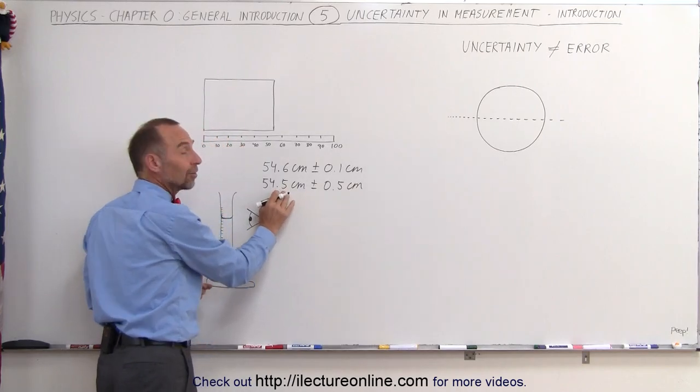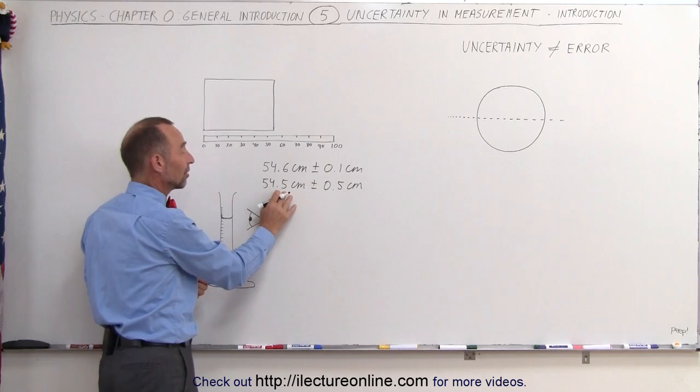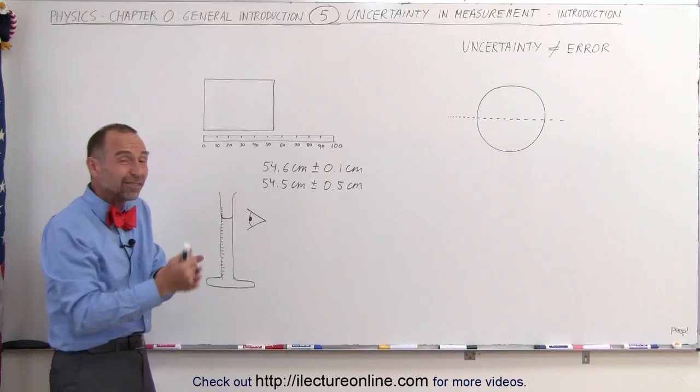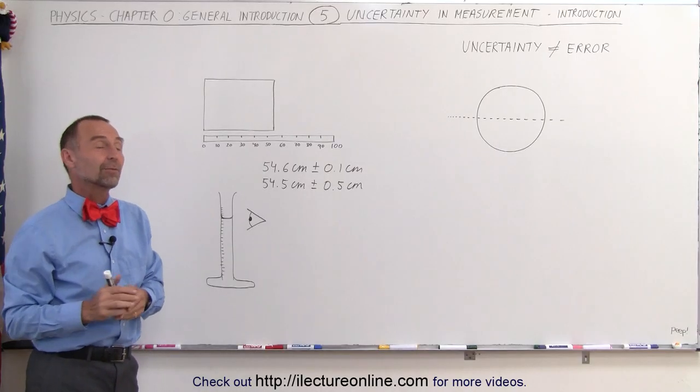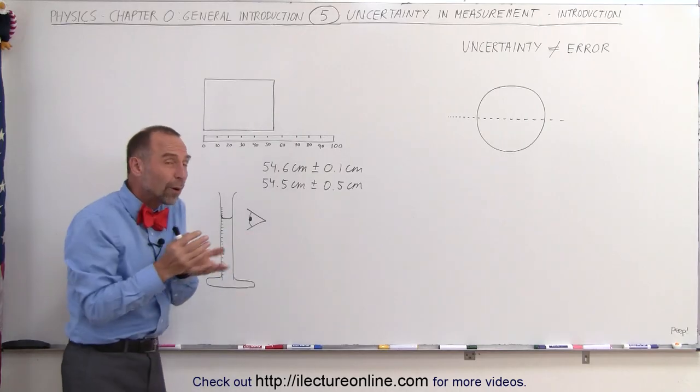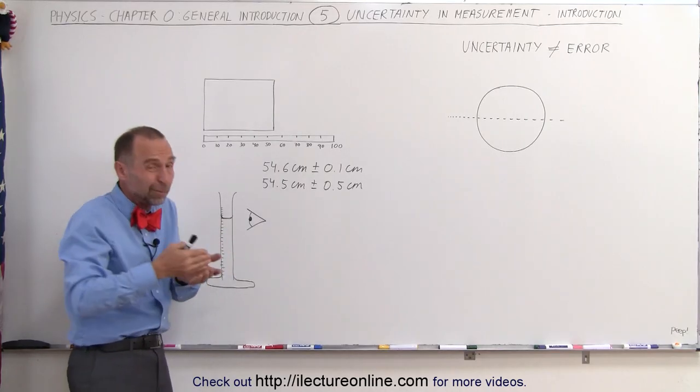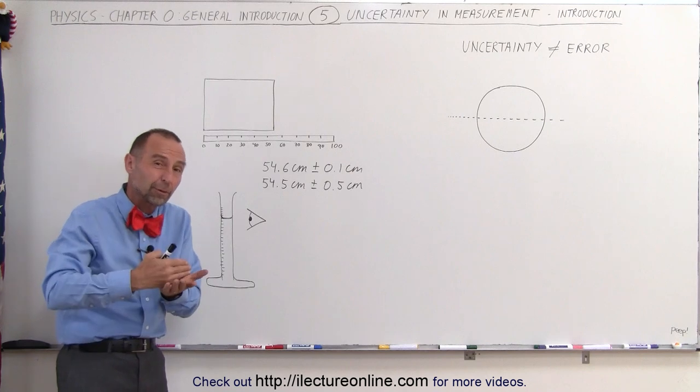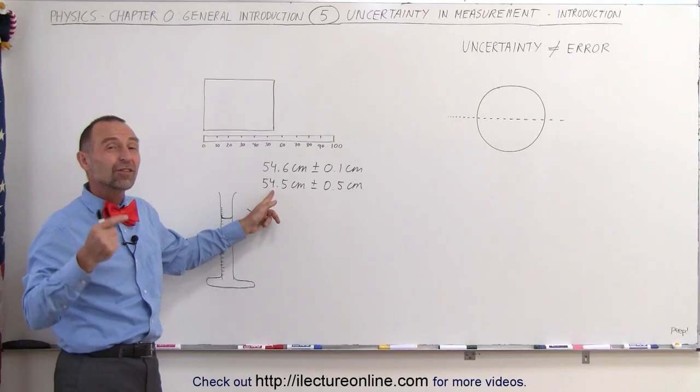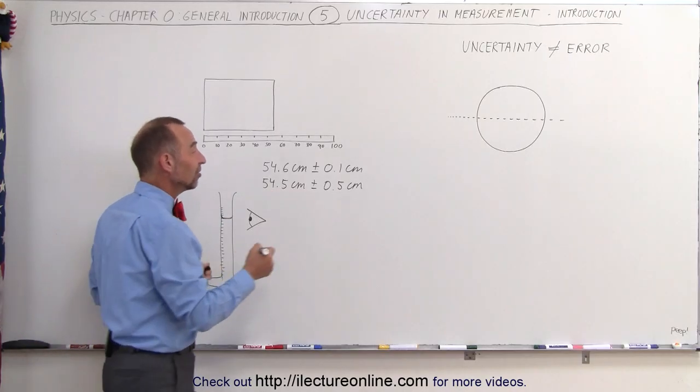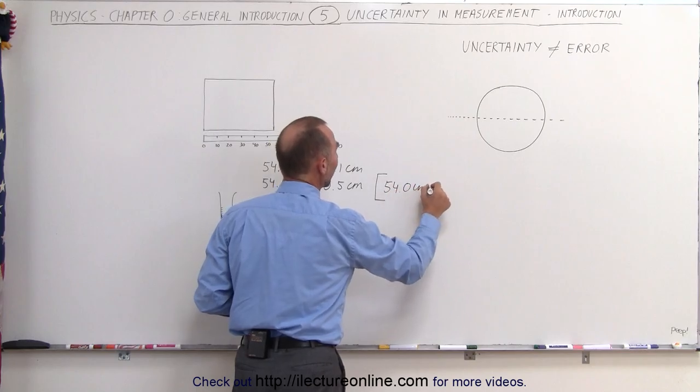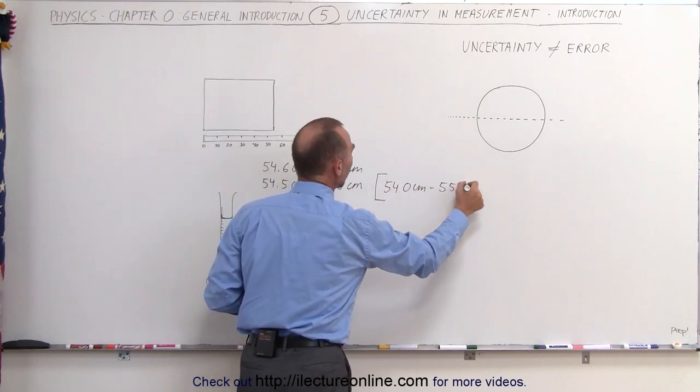If the uncertainty is 0.5 centimeters, you definitely don't want to go too accurate here on that last decimal place. You don't want to write it's 54.49 centimeters plus or minus 0.5 centimeters. You want to kind of line it up a little bit. So what this is really telling you is that you're not quite sure if it's 54.5, could have been 54.8, could have been 54.2, but what I do know that it's not bigger than 55, and it's not smaller than 54.